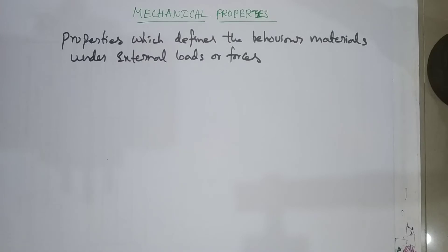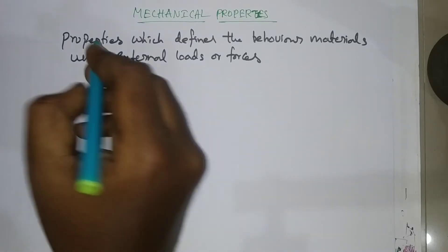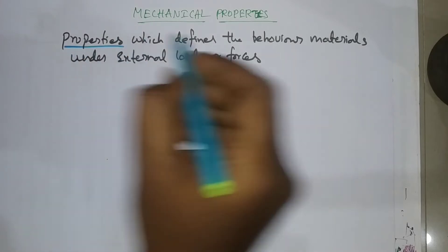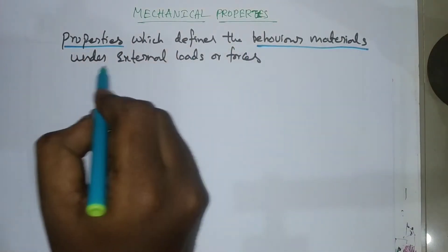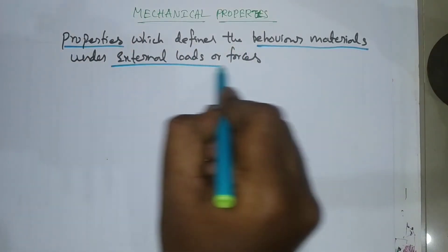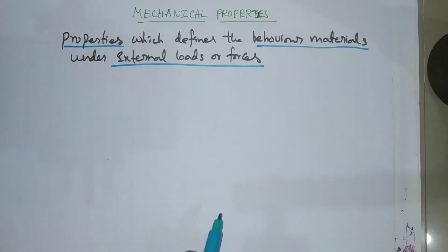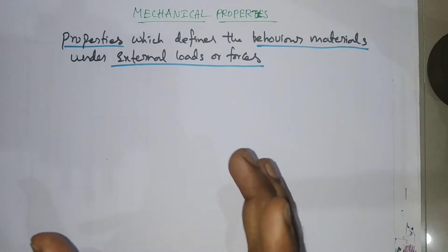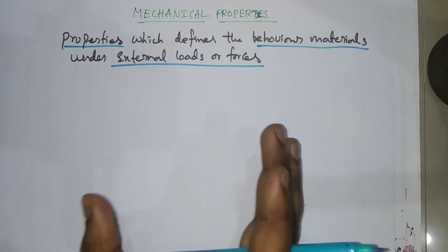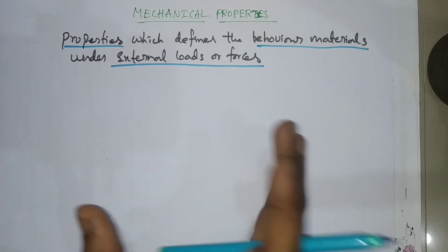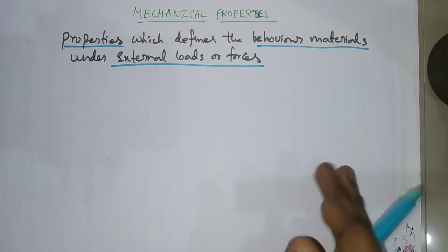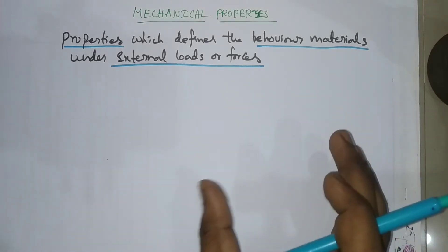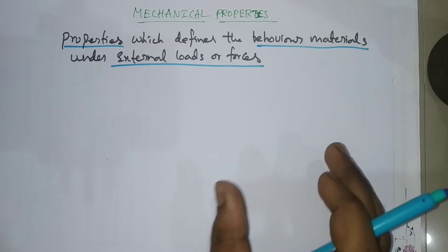Properties which define the behavior of materials under external loads are called mechanical properties. The material experiences external force or load, and the resulting behavior defines those properties.